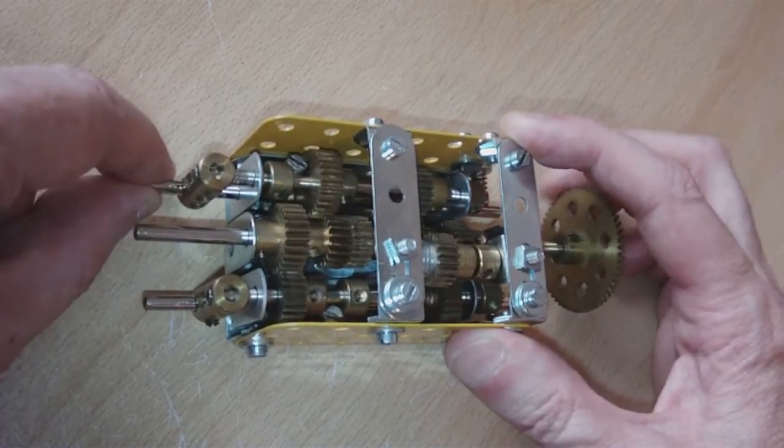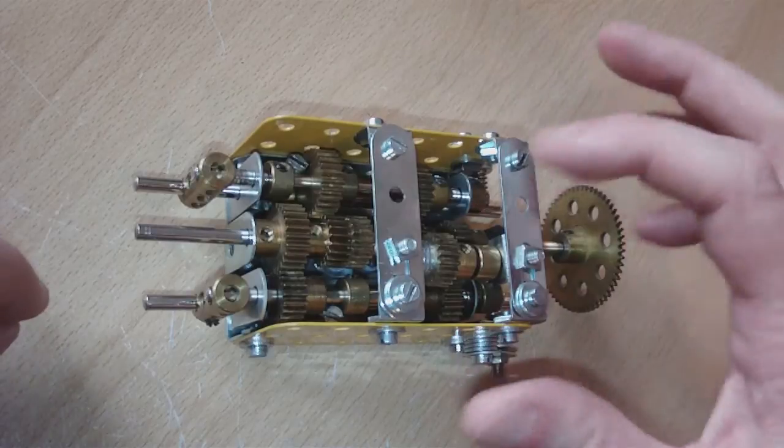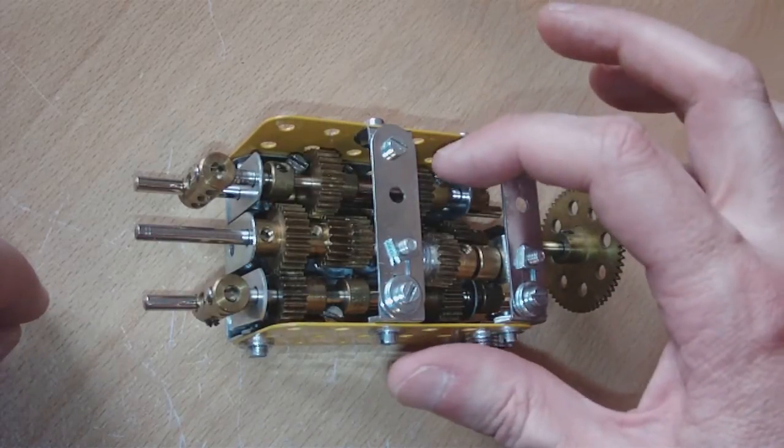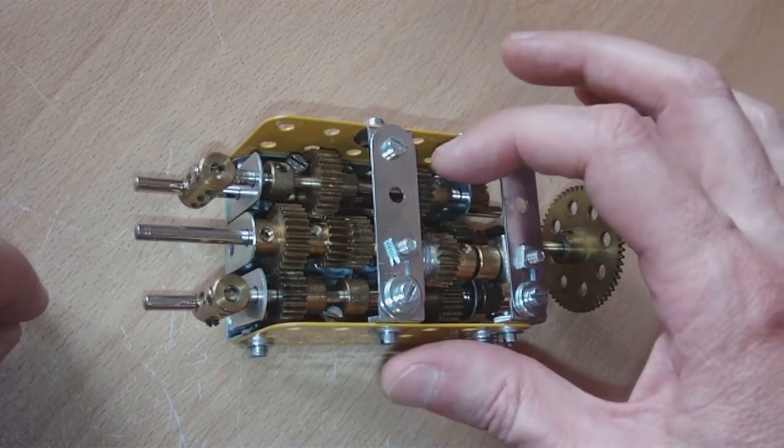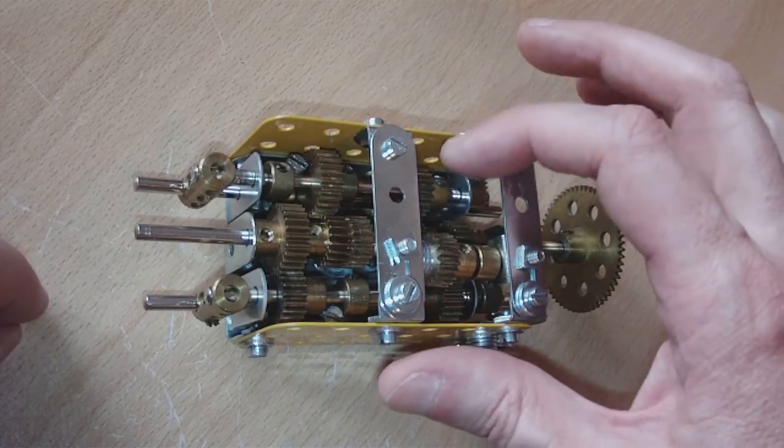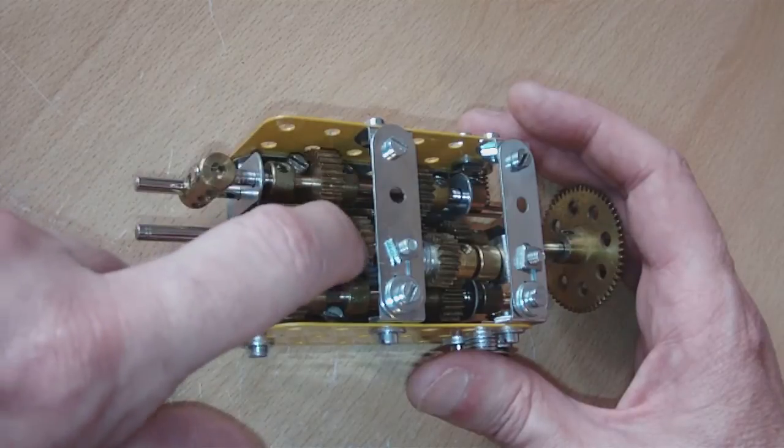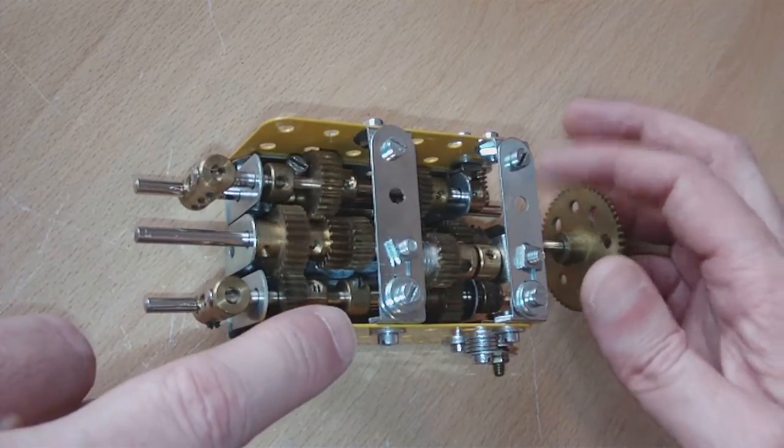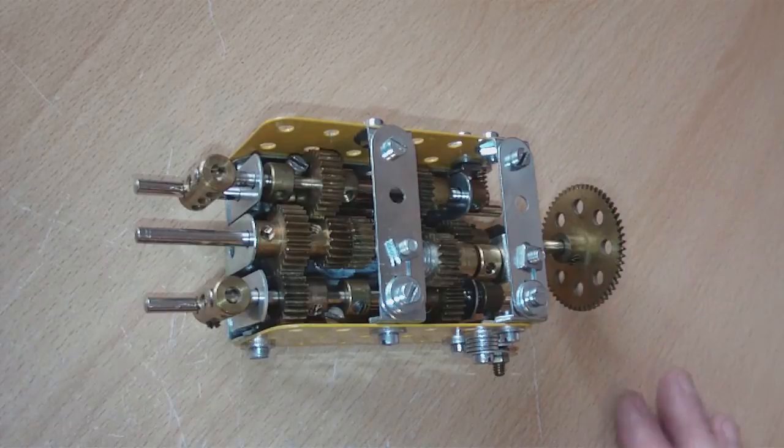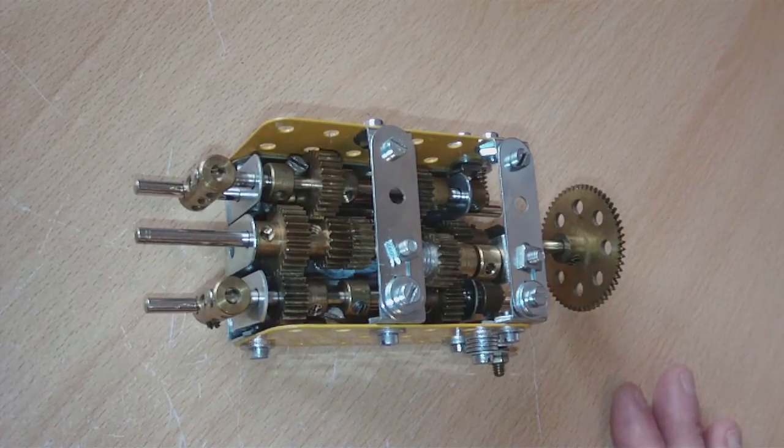And finally top gear. What we have here is a 25 tooth gear there, going to a 19 tooth gear. So that one's actually a step up ratio, and that's 381 to 625.